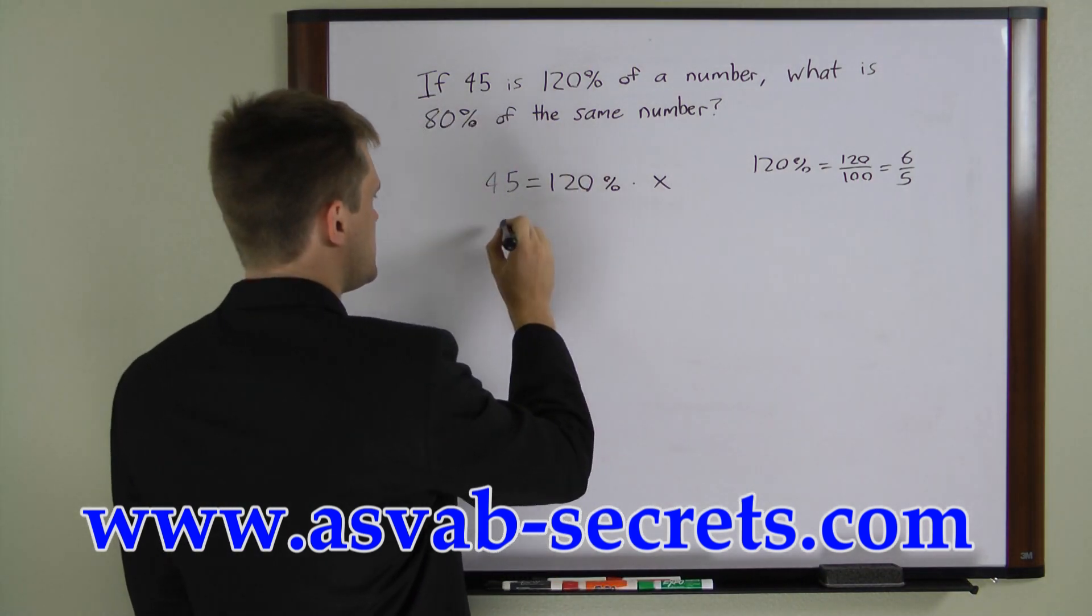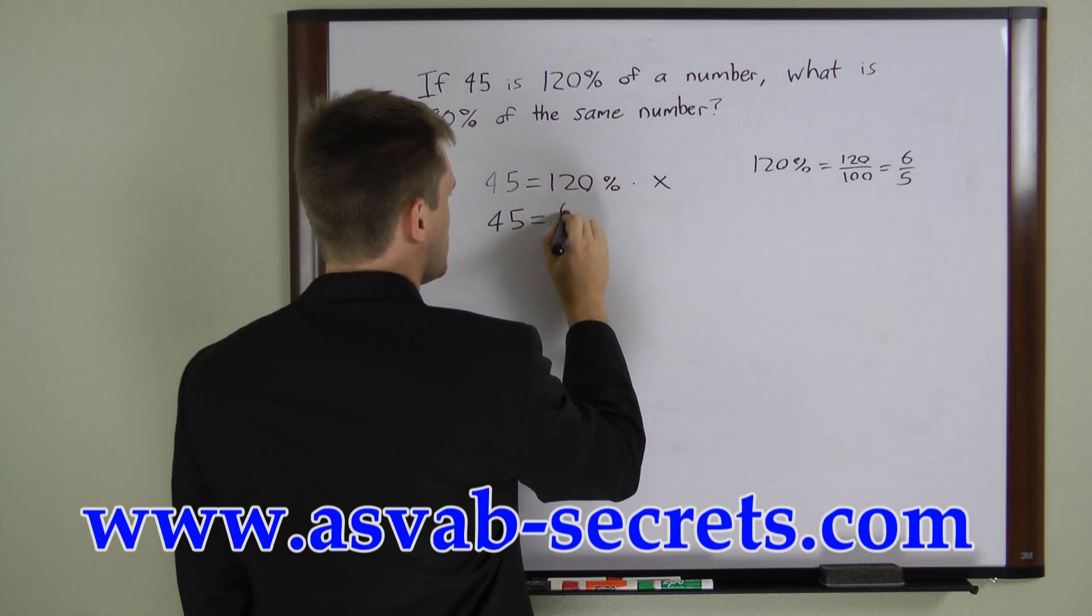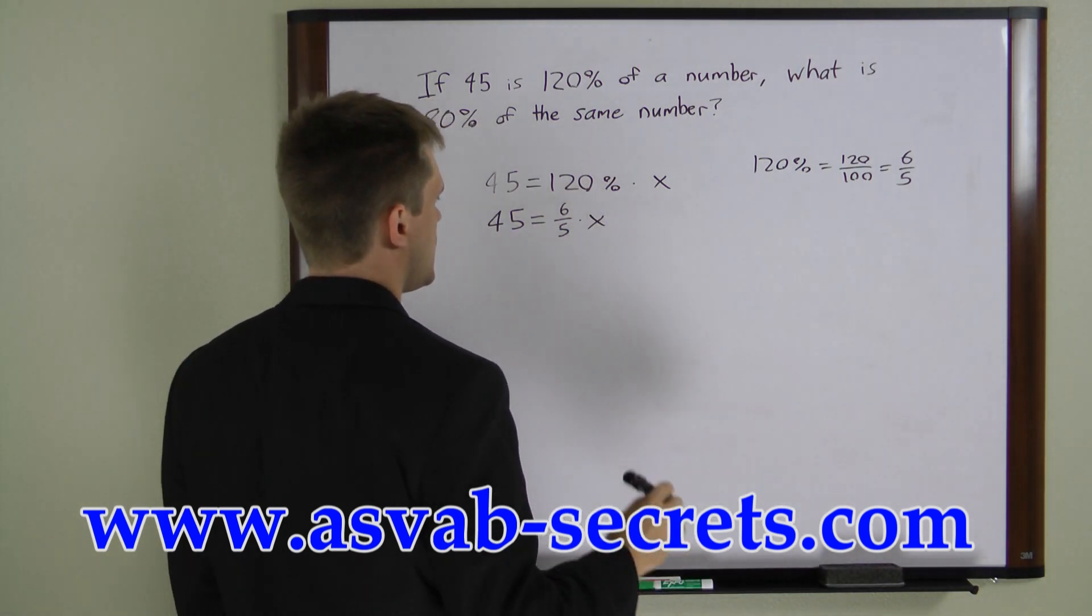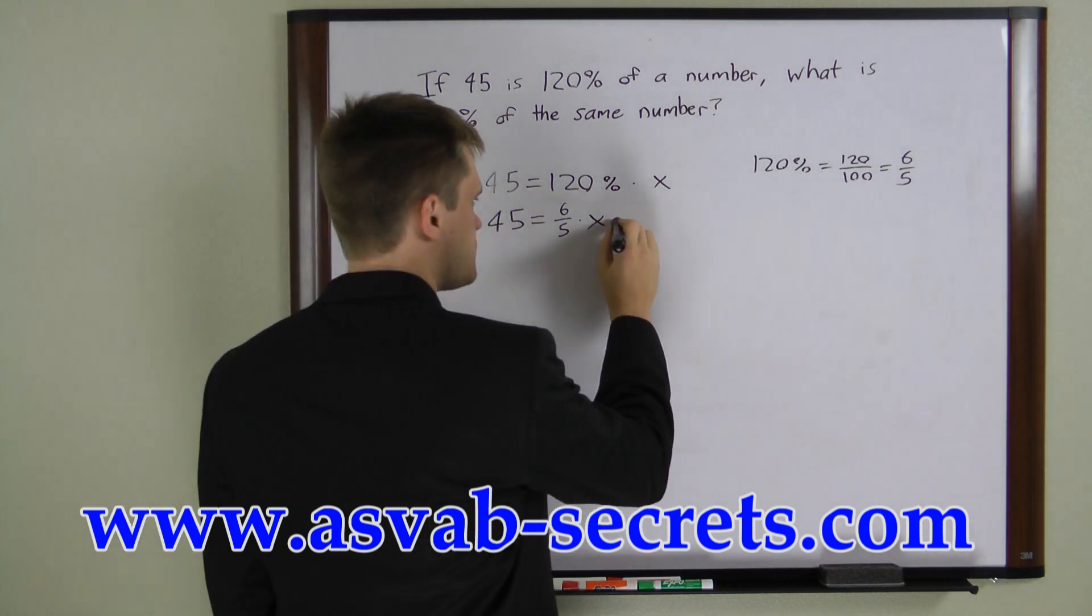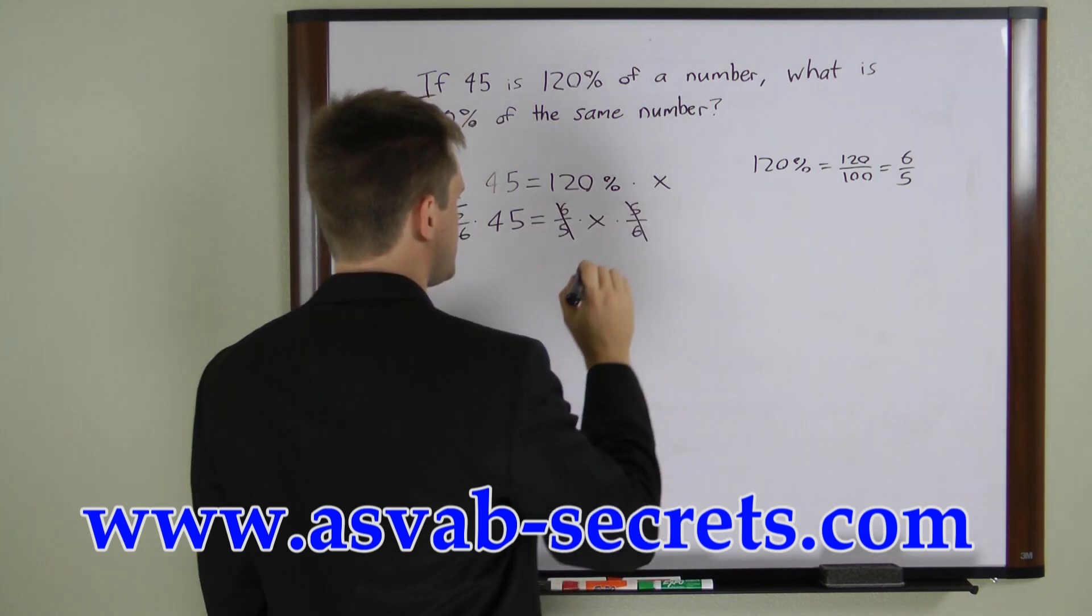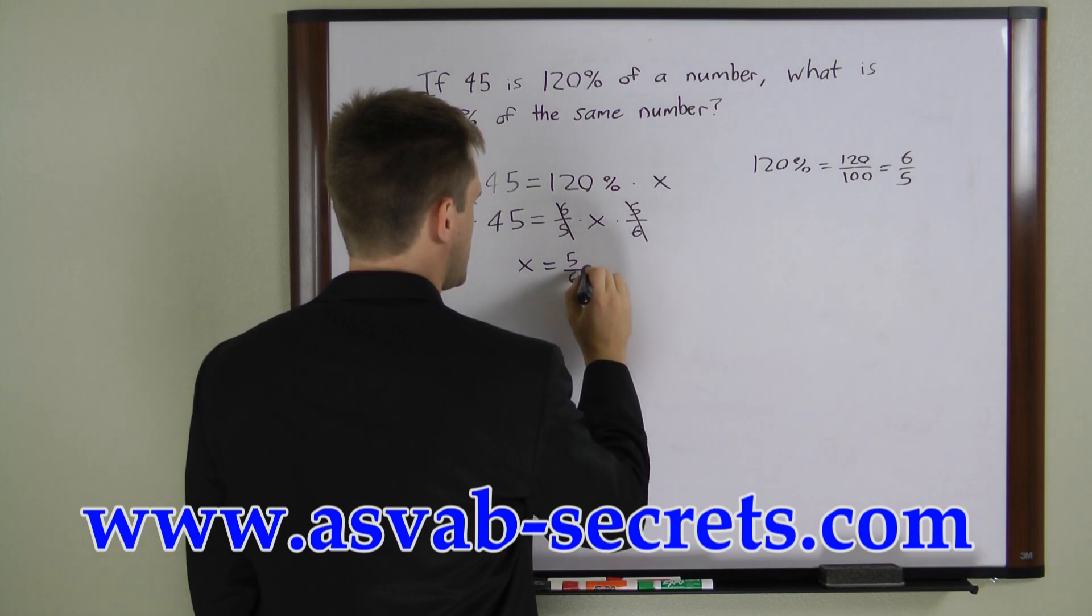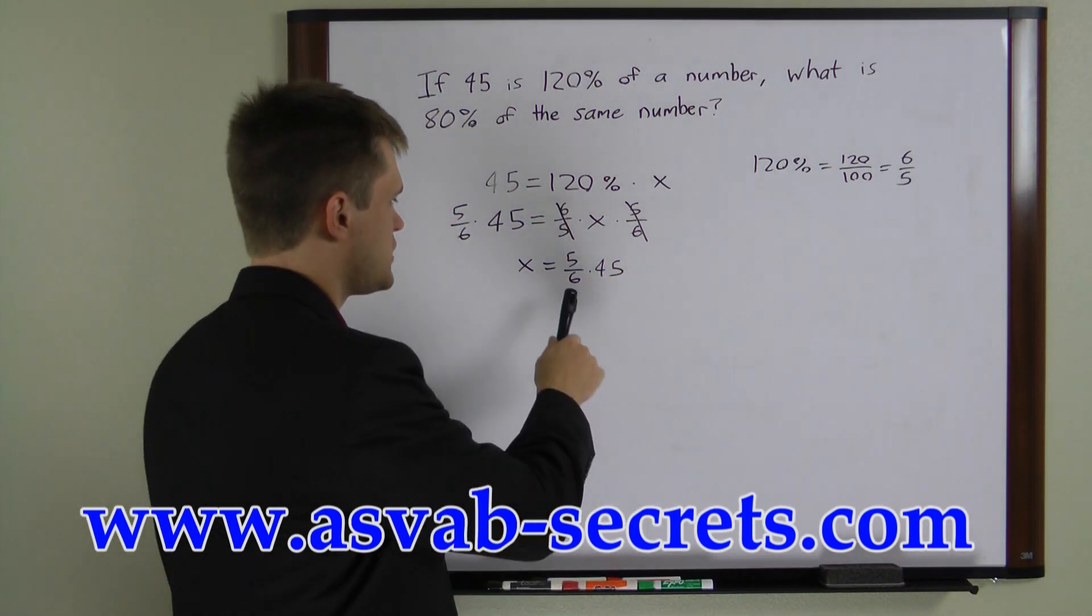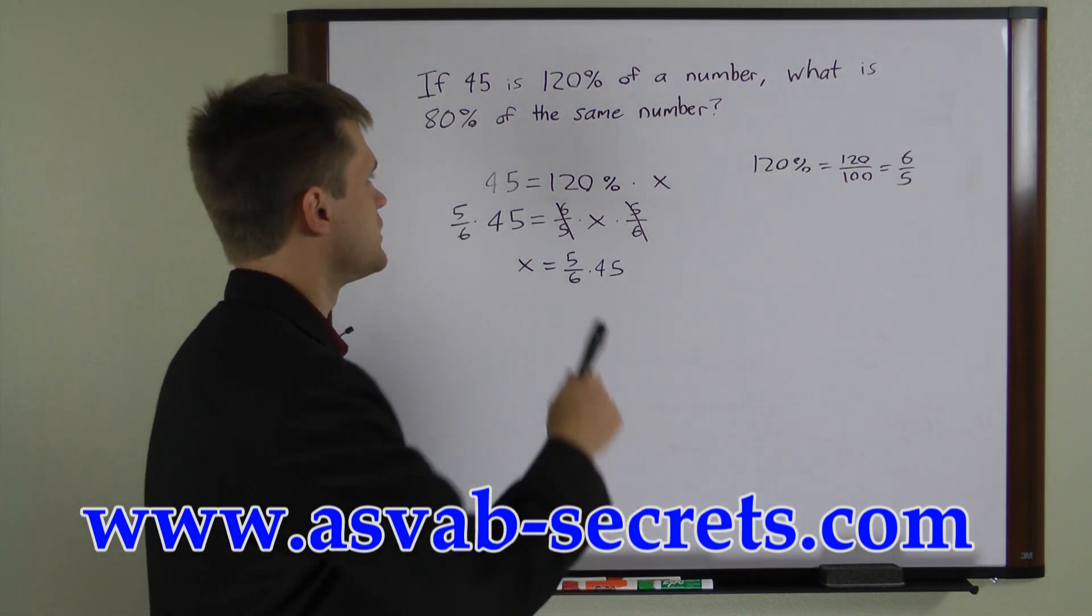Now let's substitute that into this equation: 45 equals 6 over 5 times x. We can multiply both sides by 5 over 6, which cancels to give us x equals 5 over 6 times 45. This is actually as far as we need to go with this equation, because now we're going to plug the x into the next equation.